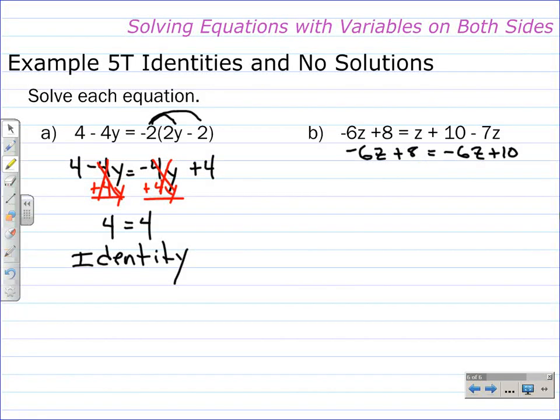When we go to add 6z to both sides, the z's are eliminated from both sides. That leaves us with the equation 8 is equal to 10, and that's not true. Therefore, there is no solution. There is no number that's going to make this equation true ever.